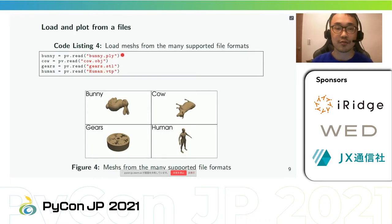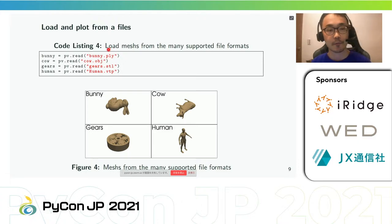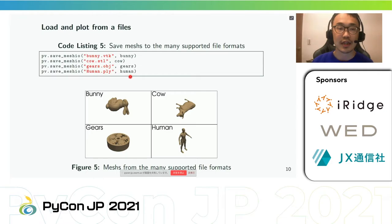We can also load a mesh from file. Loading a mesh is trivial if your data is in one of the many supported file formats — simply use pyvista.read() to load your spatially referenced data set into a PyVista mesh object. Note that we can also export any PyVista mesh to any file format supported by meshio. To save using meshio, use pyvista.save_meshio().